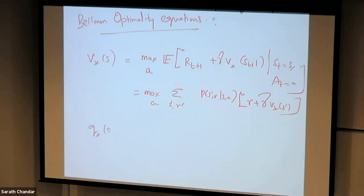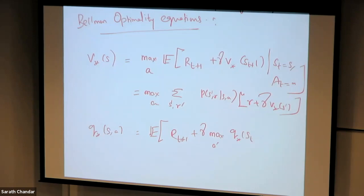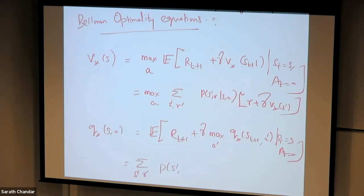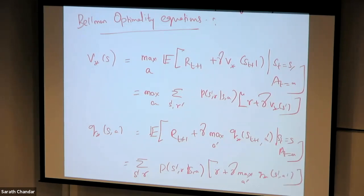Q-star of s, a is given by the expected value of R_{t+1} plus gamma times max over a' of Q-star(S_{t+1}, a'), given S_t equals s and A_t equals a. Equivalently, it's the summation over s' and r of P(s', r | s, a) times [r plus gamma times max over a' of Q-star(s', a')]. The dynamic programming solutions are obtained by turning these Bellman optimality equations into update rules.